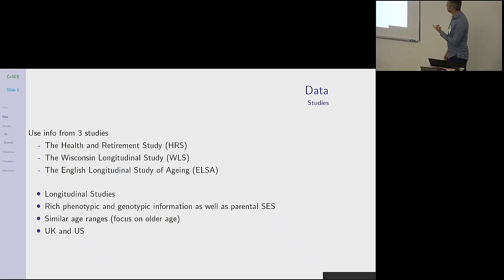We use the health and retirement study, the Wisconsin longitudinal study, and the English longitudinal study of aging. These are longitudinal studies. They have rich phenotypic and genotypic information. They have this parental socioeconomic status measure. They have similar age ranges. So we focus on older age individuals and their data sets from the UK and US.